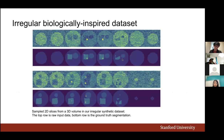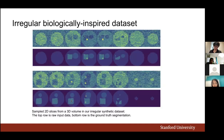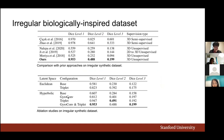Ablation studies show that all our contributions are effective: the hierarchical triplet loss improves performance, the gyroplane layer improves performance, and hyperbolic representations are generally better than Euclidean representations. Adding the triplet loss with just Euclidean distance distance is helpful, and hyperbolic representations provide additional gains. However, the synergistic effect of combining both components is sometimes less than the sum of their individual effects.